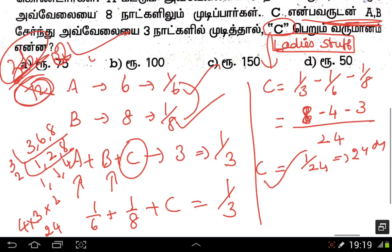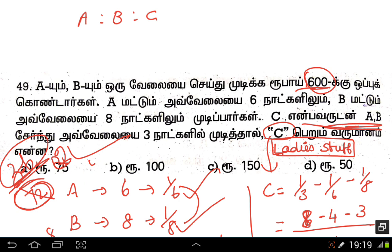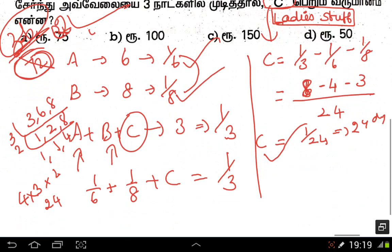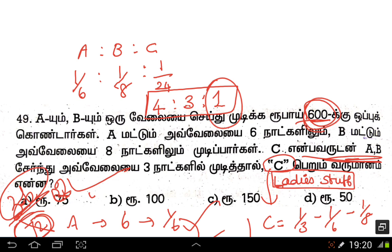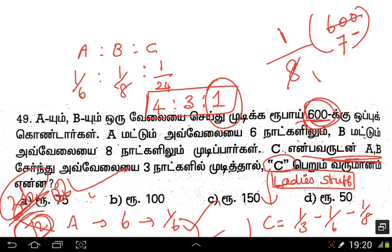Now we find the ratio of work. A is 1/6, B is 1/8, C is 1/24. Multiplying through by 24: A is 4, B is 3, C is 1. The ratio is 4 to 3 to 1. If total earnings are 600, C's share corresponds to ratio value 1. So 600 divided by 8 gives 75. The answer is option A: 75 is correct.